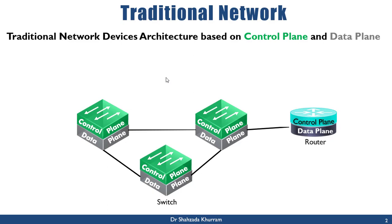Here you can see we have a small network which consists of switches and routers. Each network device on a network has its own architecture, and this architecture is based on a control plane and a data plane. Every device has its own control plane and data plane.